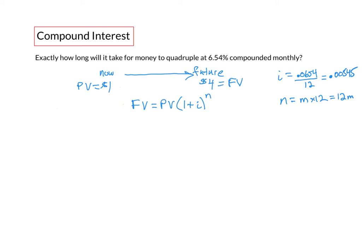Okay let's substitute all these values into our equation so future value is 4, present value is 1, 1 plus i which is 0.00545 to the 12m. So we have an equation here with just one variable which we can then solve. So using BEDMAS we start in the brackets, we add these two numbers together.